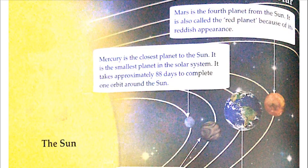Now we come to Mars. Mars is the fourth planet from the sun. It is also called the red planet because of its reddish appearance — jab hum isse dekhte hain toh yeh red appear hota hai.